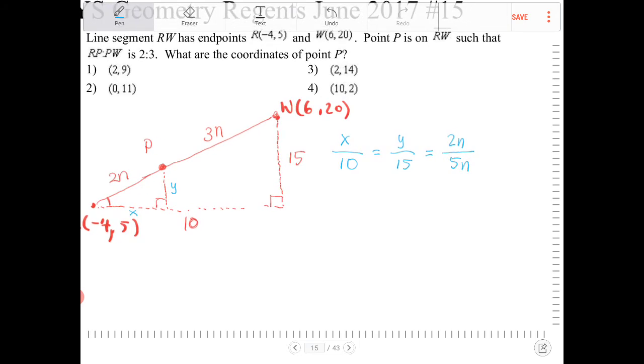Notice now the n's cancel. So in other words, I have two equations here. I have x over 10 is equal to 2 fifths, and I have y over 15 is also equal to 2 fifths.